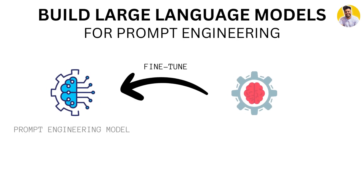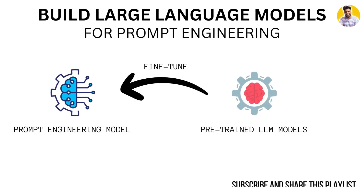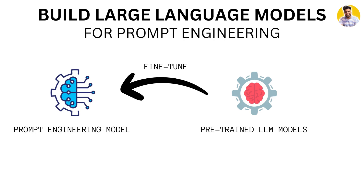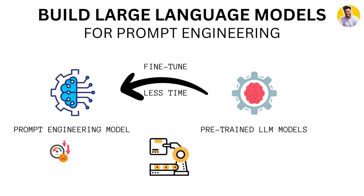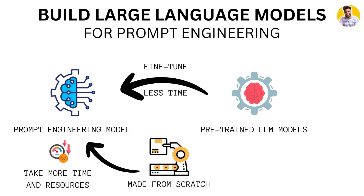One of the most common approaches to building a prompt engineering model is to use a pre-trained large language model and fine-tune it for your specific use case. This can save a lot of time and resources compared to building a large language model from scratch.